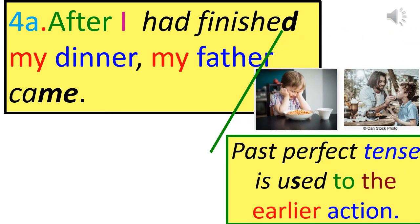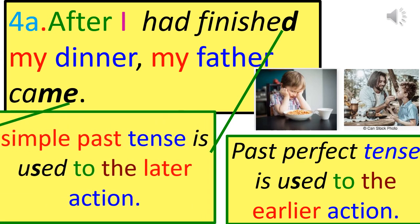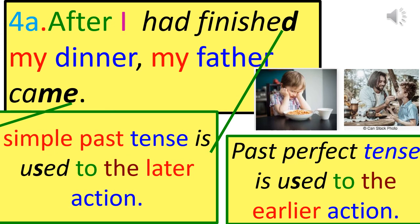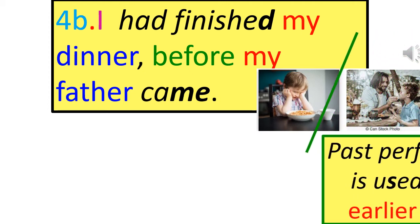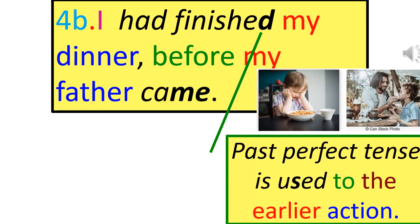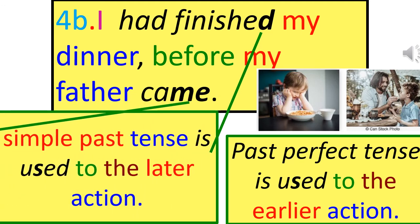Past Perfect Tense is used for the earlier action; Simple Past Tense is used for the later action. The action which occurred earlier is expressed in the Past Perfect Tense, whereas the action which occurred later is expressed in the Simple Past Tense. Using 'before': 'I had finished my dinner before my father came.'